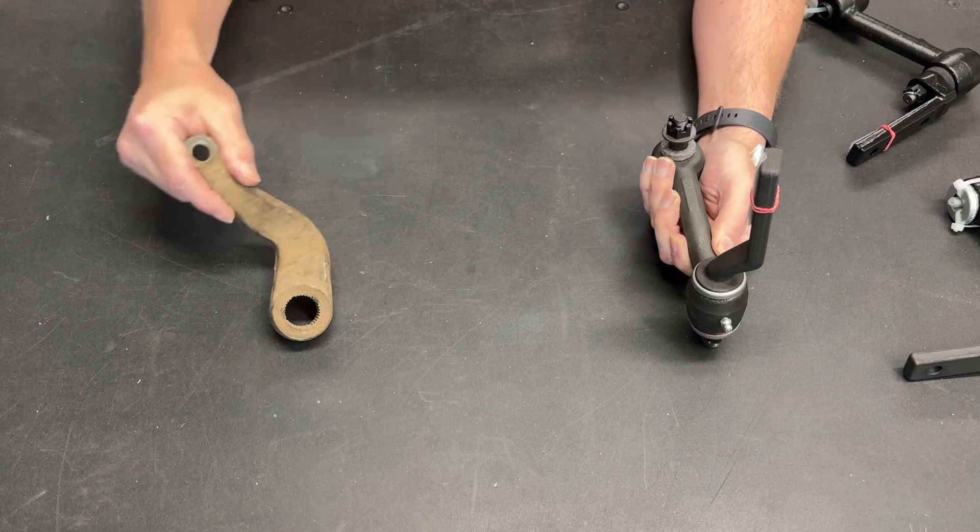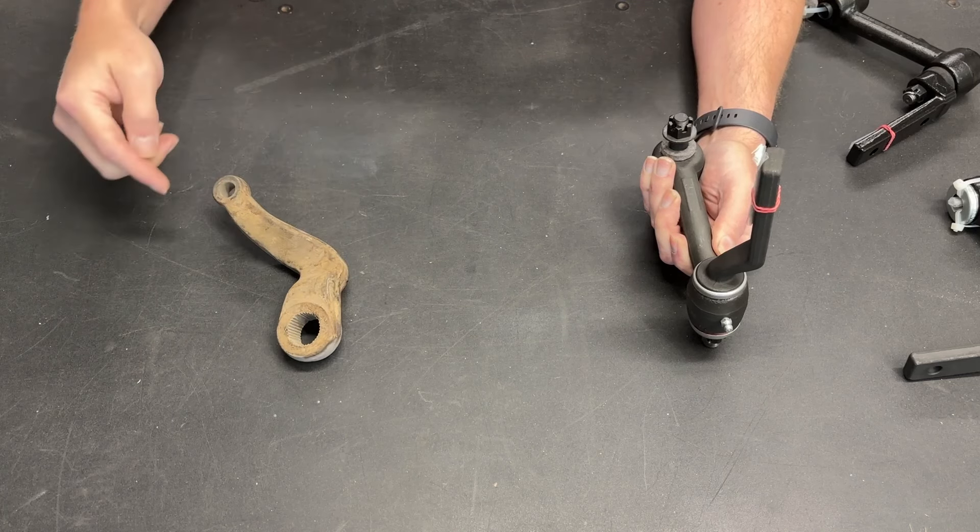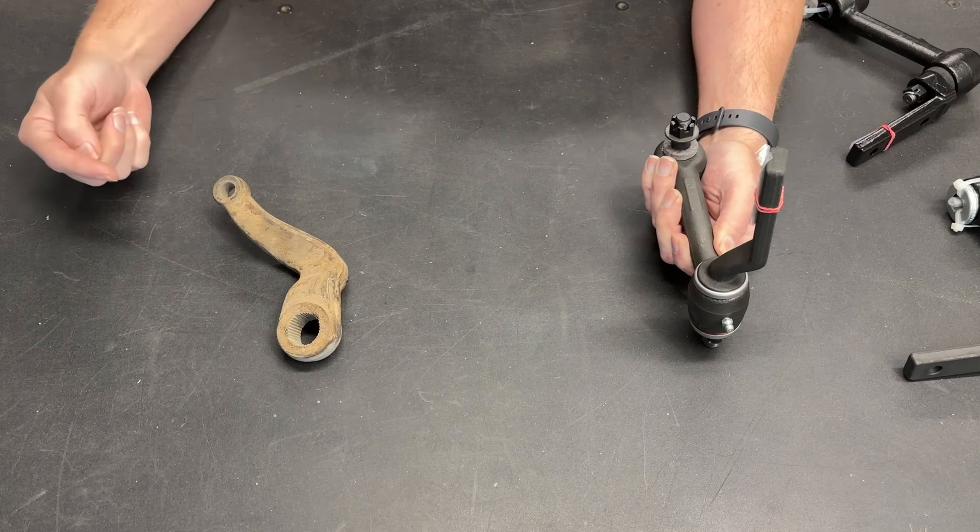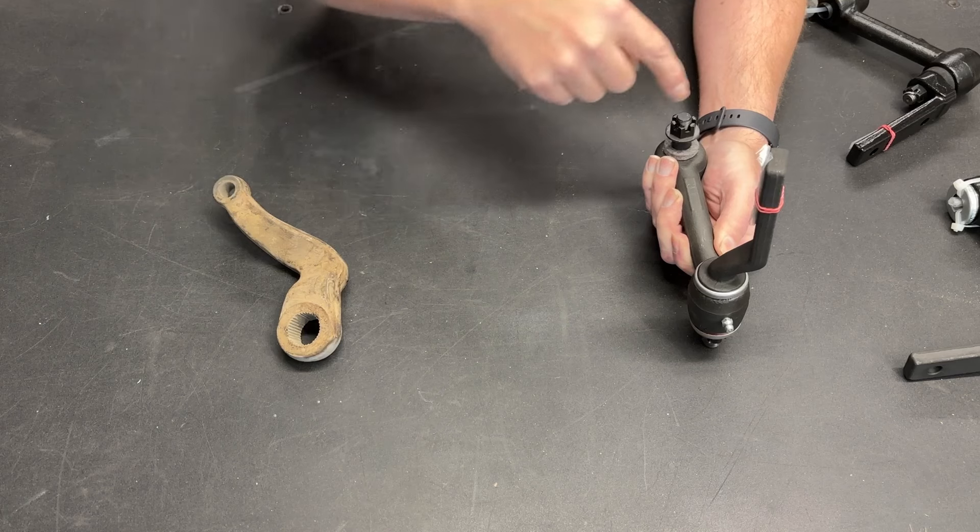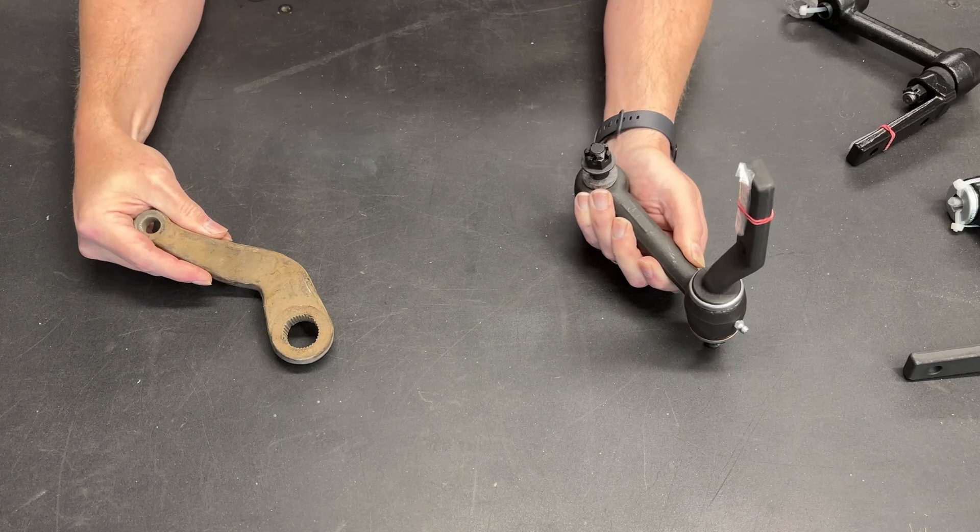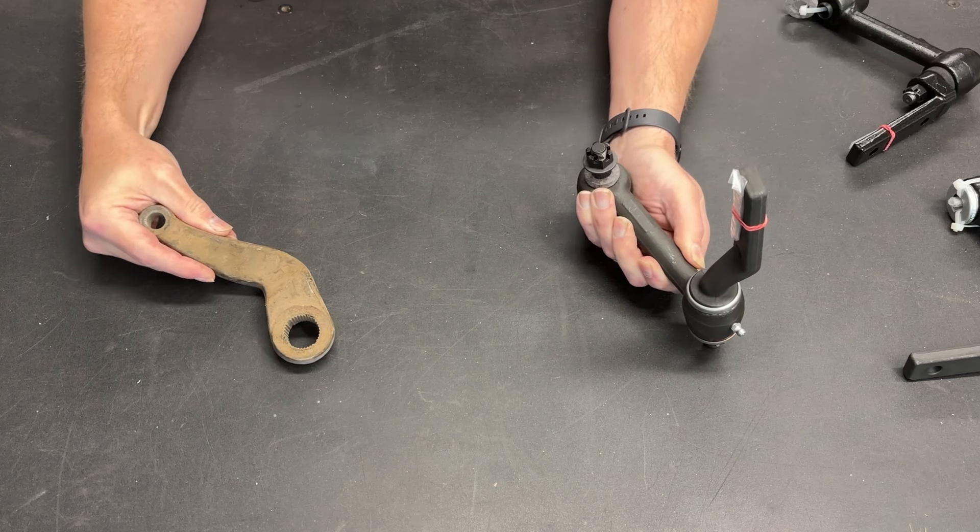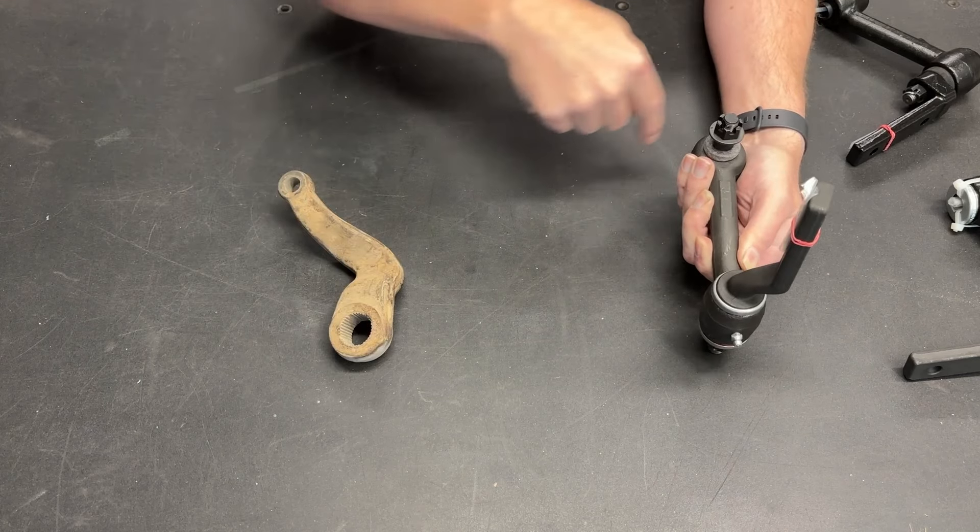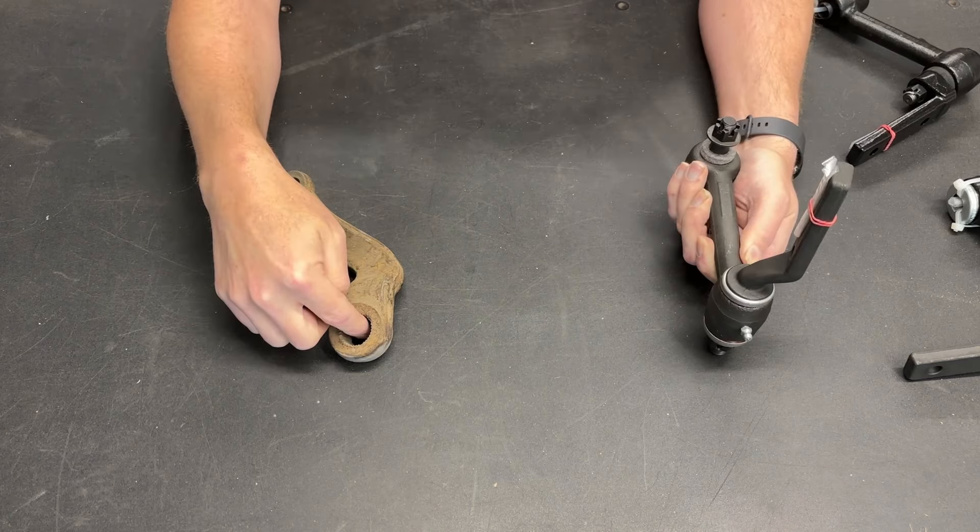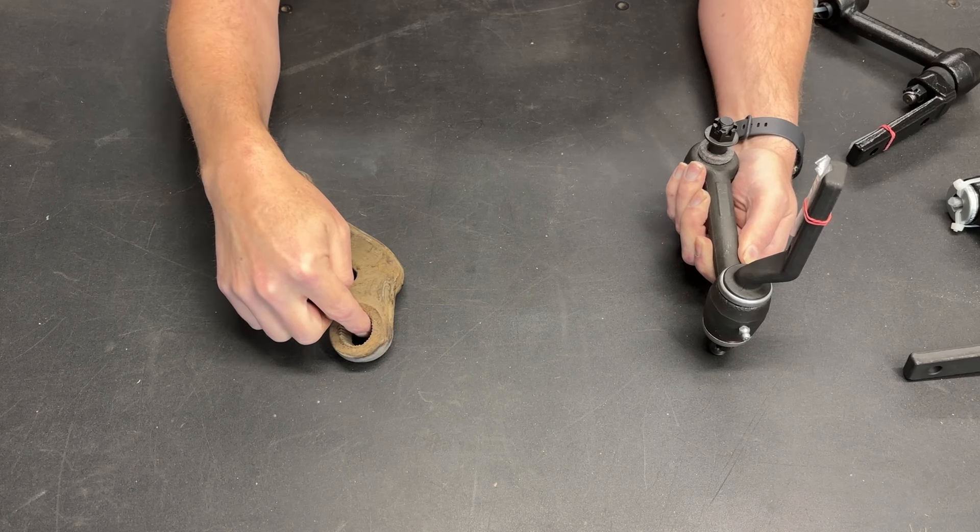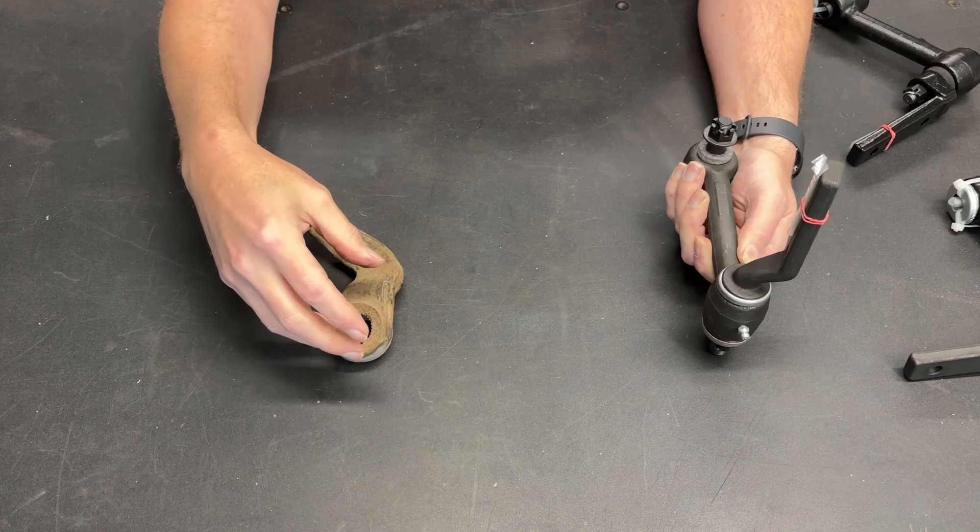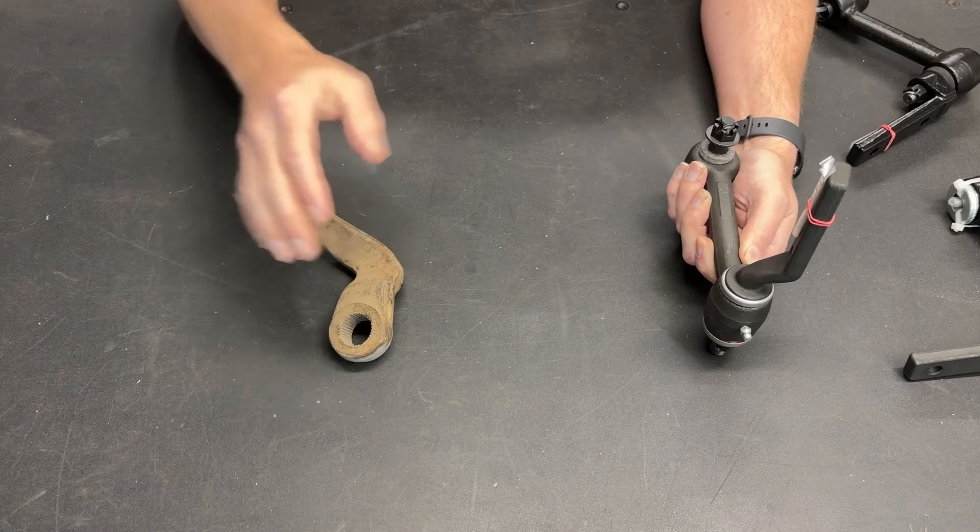Now the pitman arm is going to attach to a drag link, which is for all intents and purposes a bar that connects this point to this point. And as we turn the steering, these parts pivot together and they move together, and so that drag link moves back and forth as you are turning the steering. The shaft that's coming out of the steering column and going into the pitman arm is a solid steel shaft with bearings around it, so there is no flex, it is just turning.